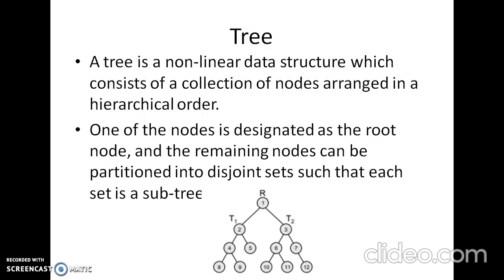We are going to see a non-linear data structure which is a tree, which consists of a collection of nodes arranged in a hierarchical order. One of the nodes is designated as the root node and the remaining nodes can be partitioned into disjoint sets such that each set is a subtree of the root. Each node contains a data element and a pointer for each subtree of the node.